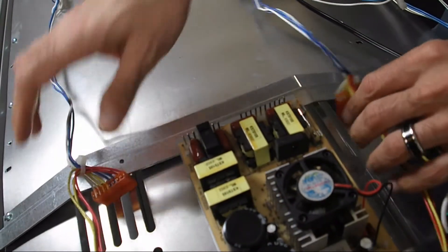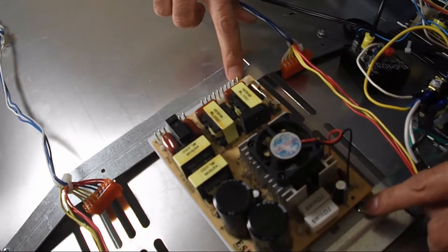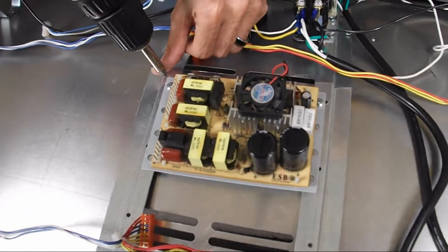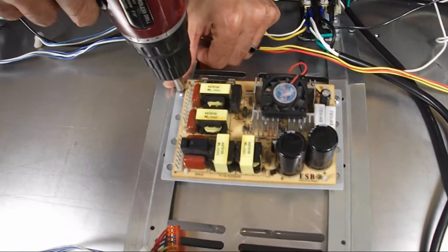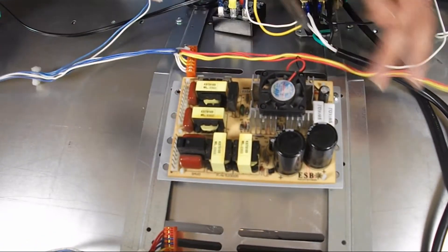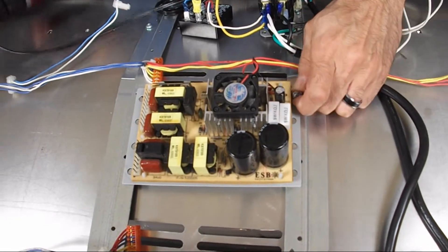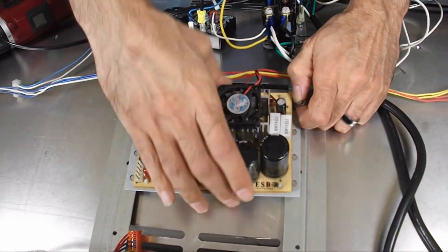With those disconnected, usually there's only two screws holding it at the base plate there. With a screwdriver, we can go ahead and remove that. I'm going to take it out.